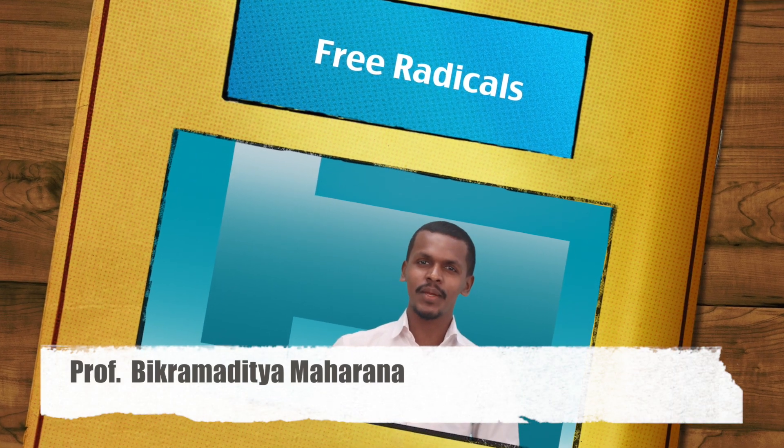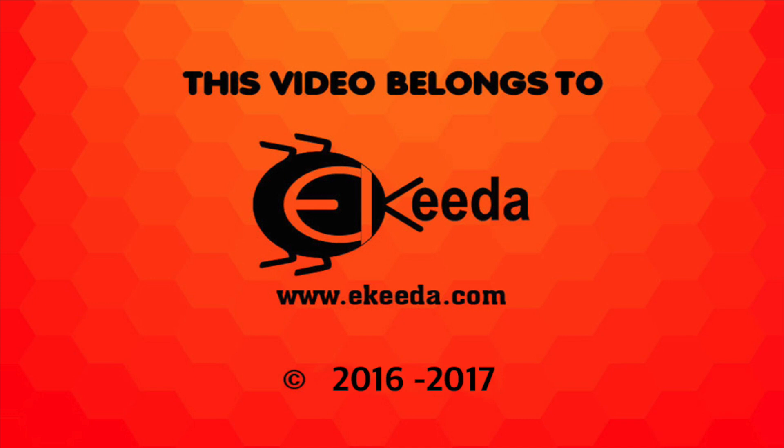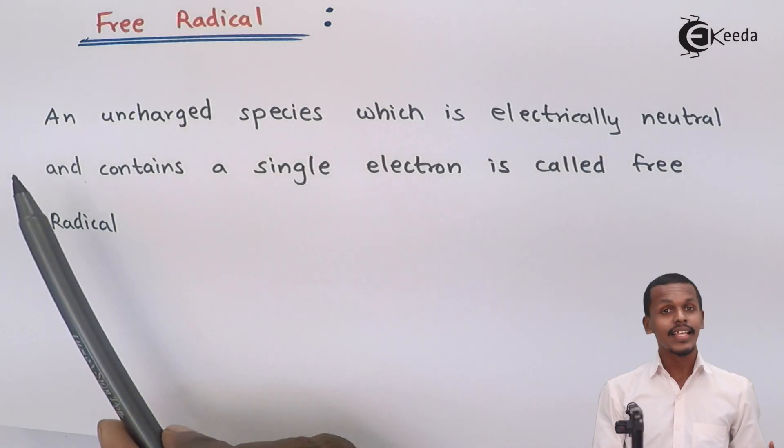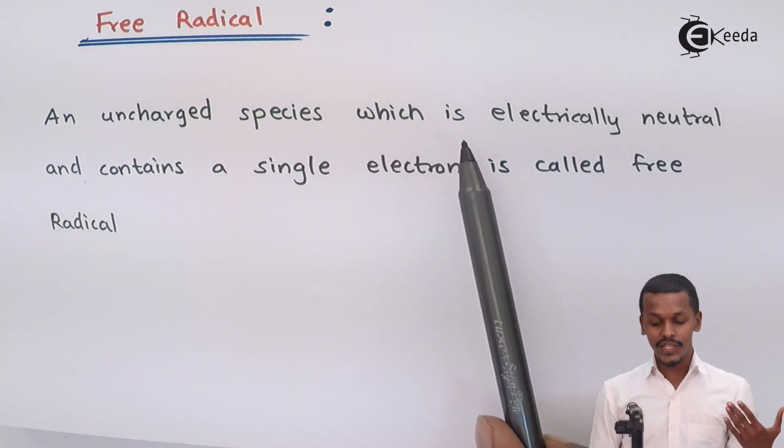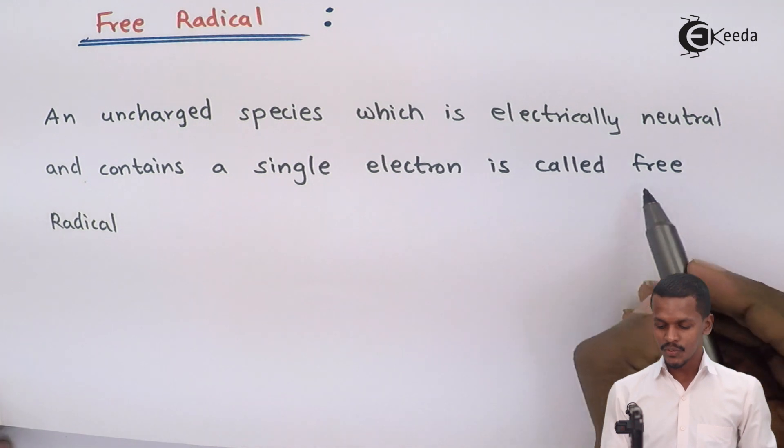In this chapter on basic principles and techniques in organic chemistry, we are doing the topic of free radicals. We are going to discuss free radicals, which come up when a homolytic fission occurs for a particular reactant. A free radical is an uncharged species which is electrically neutral and contains a single unpaired electron.